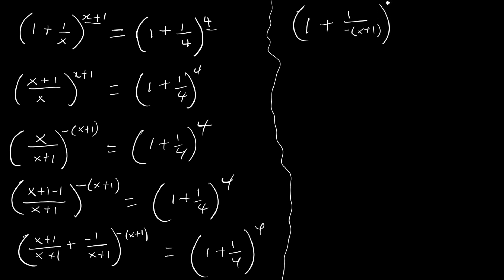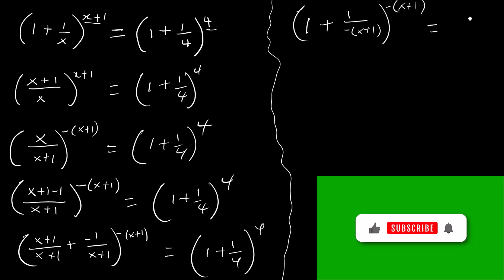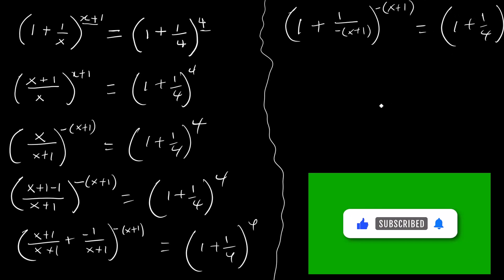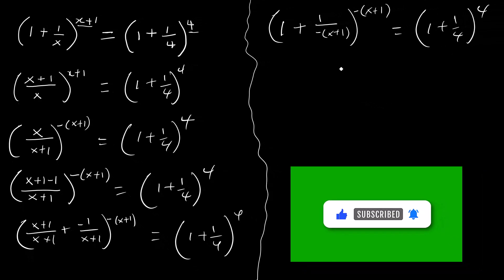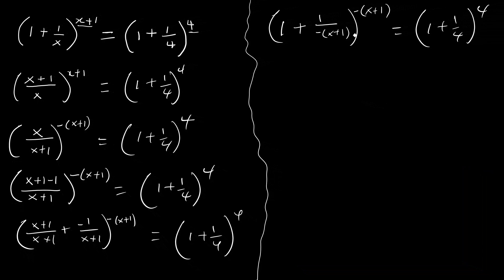Then we have the power x plus one. Let's observe something here. Now we have one here - let me change the color - we have one here, one there, one here and here.